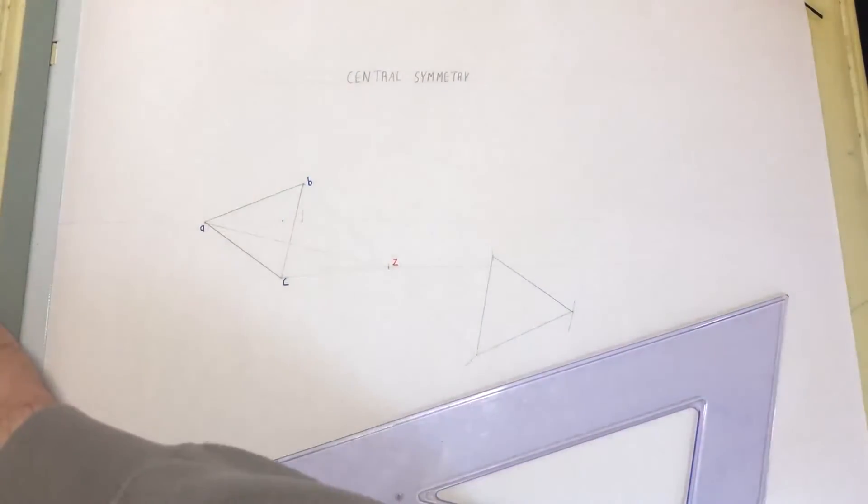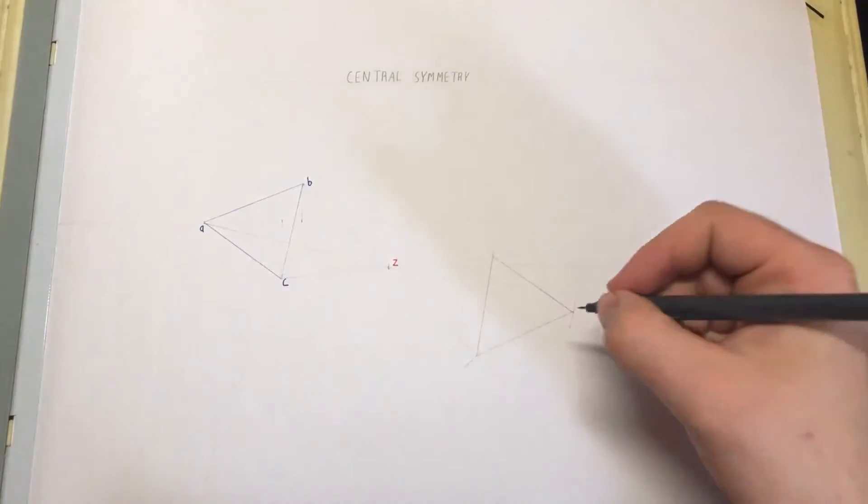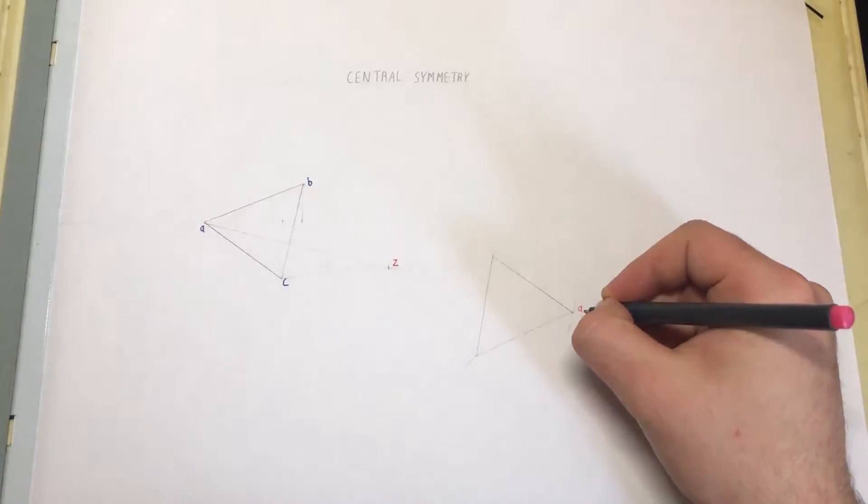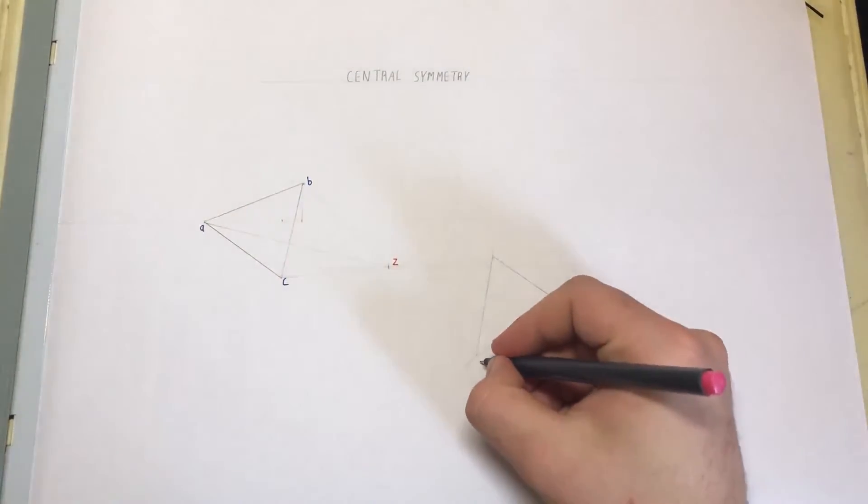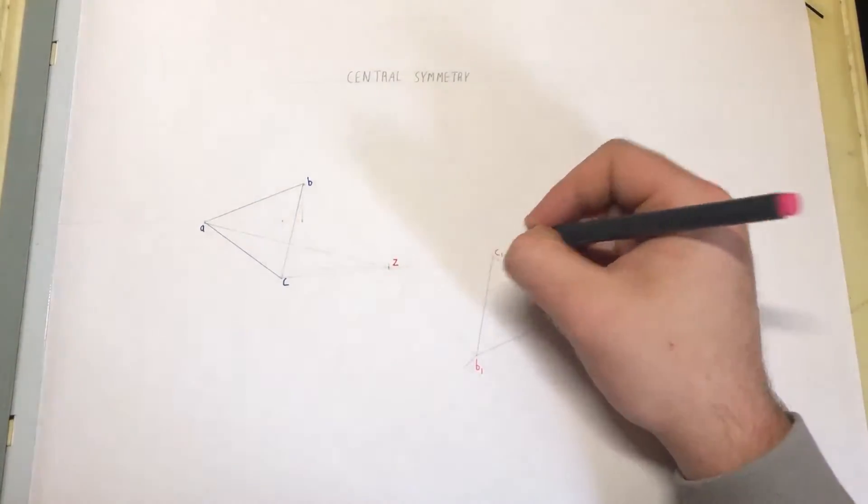We're going to label them now. So this point here is A1, this point here is B1, and this point here is C1.